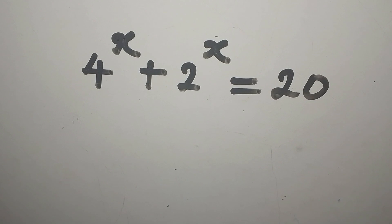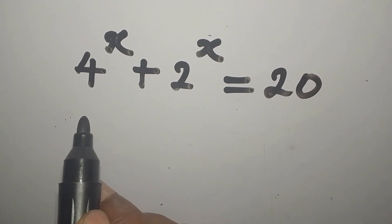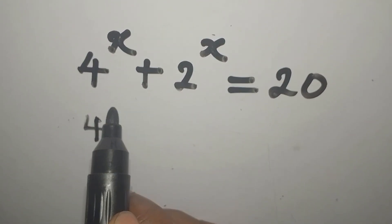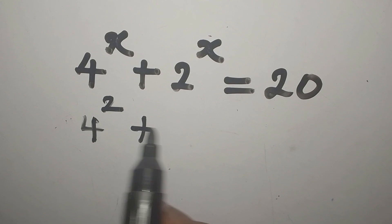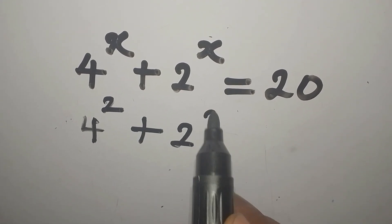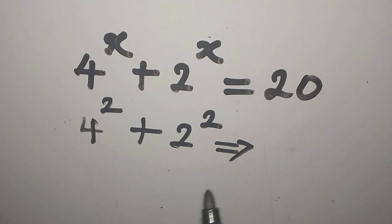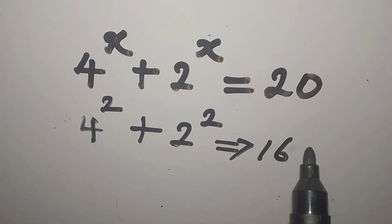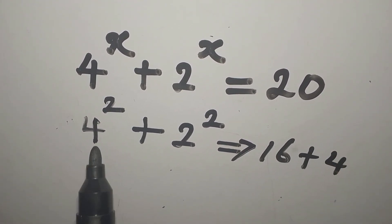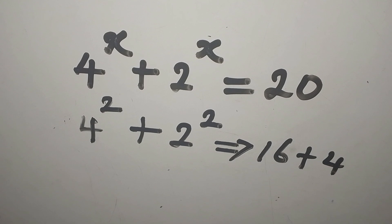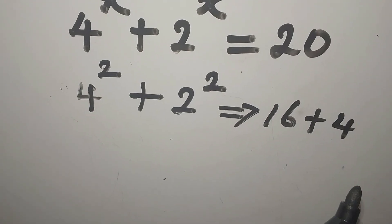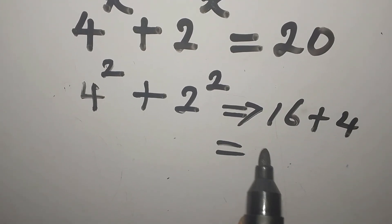But x is now 2, right? So I'm going to put 4 to the power of 2 plus 2 to the power of 2. And this implies we are having 16 plus 4. 4 squared is 16, 2 squared is 4. And then 16 plus 4 is equal to 20.